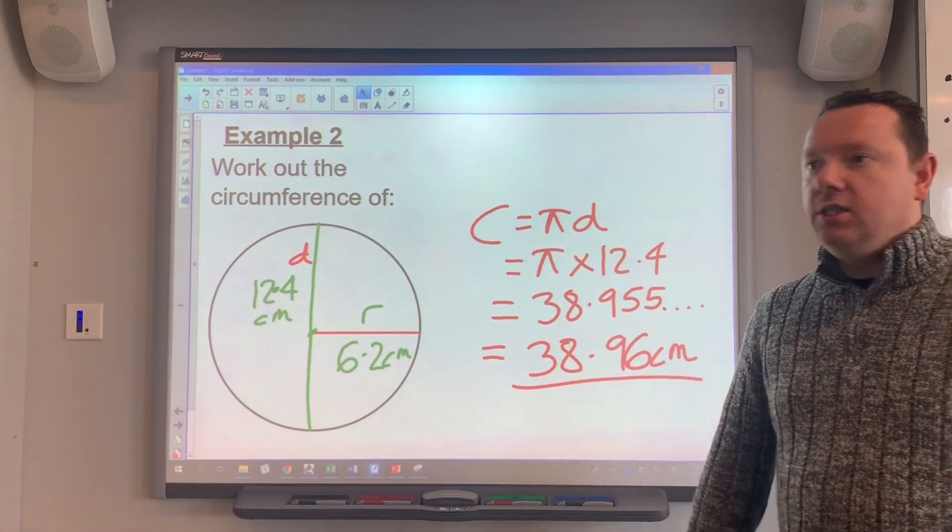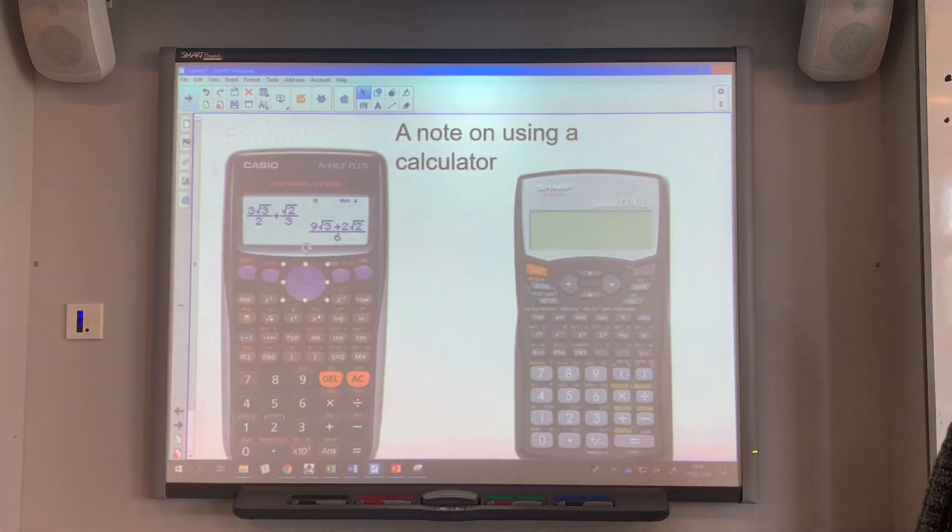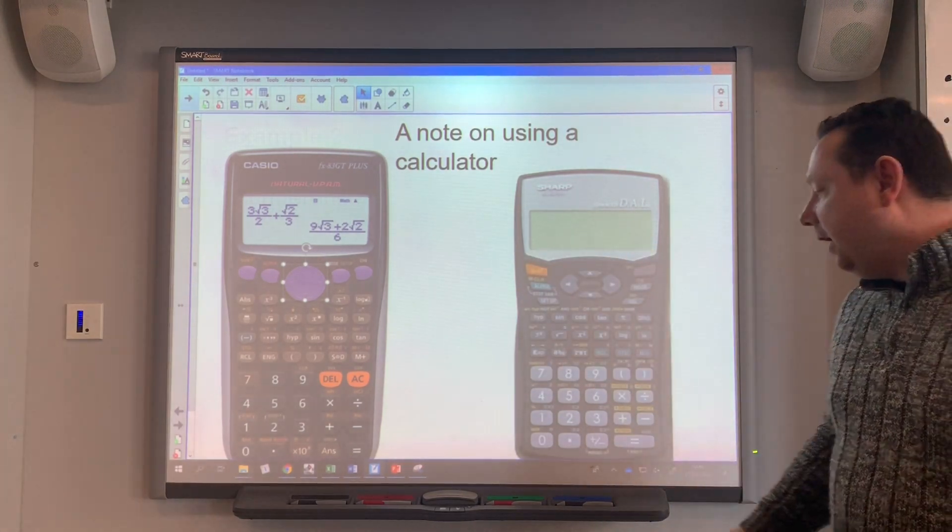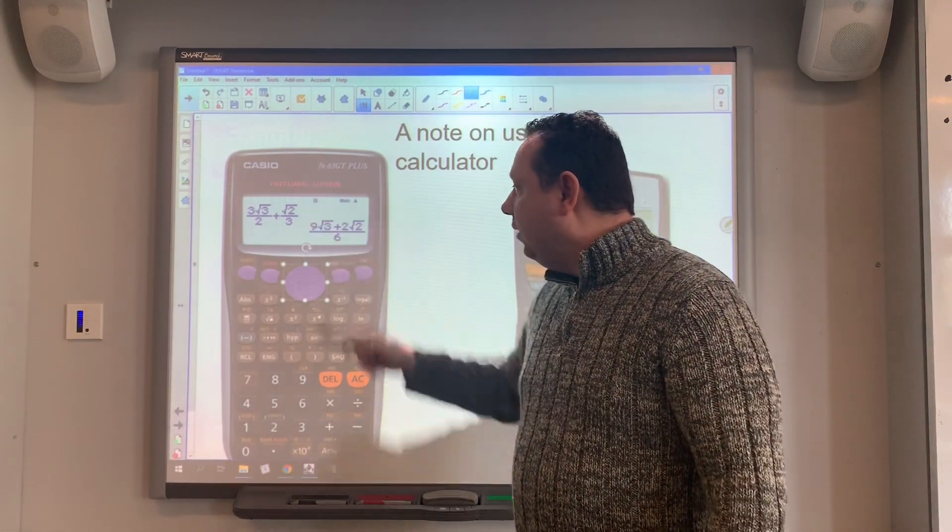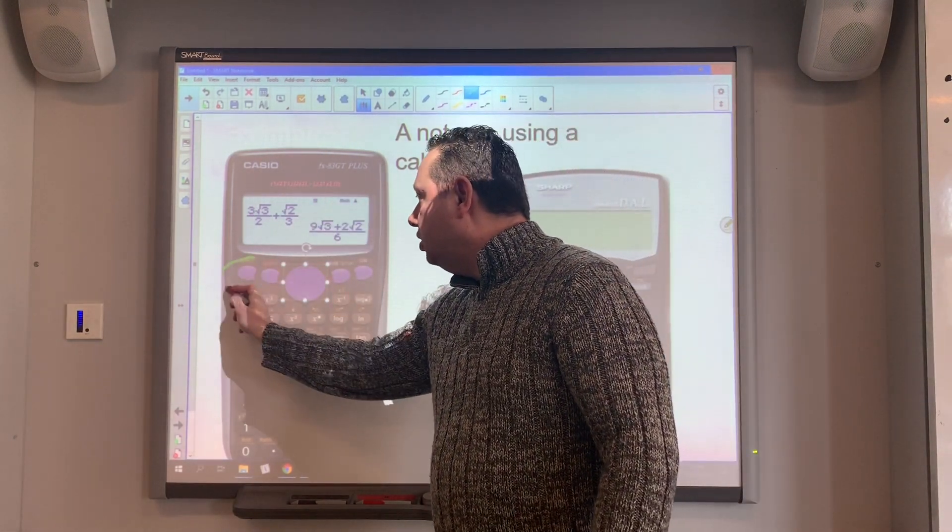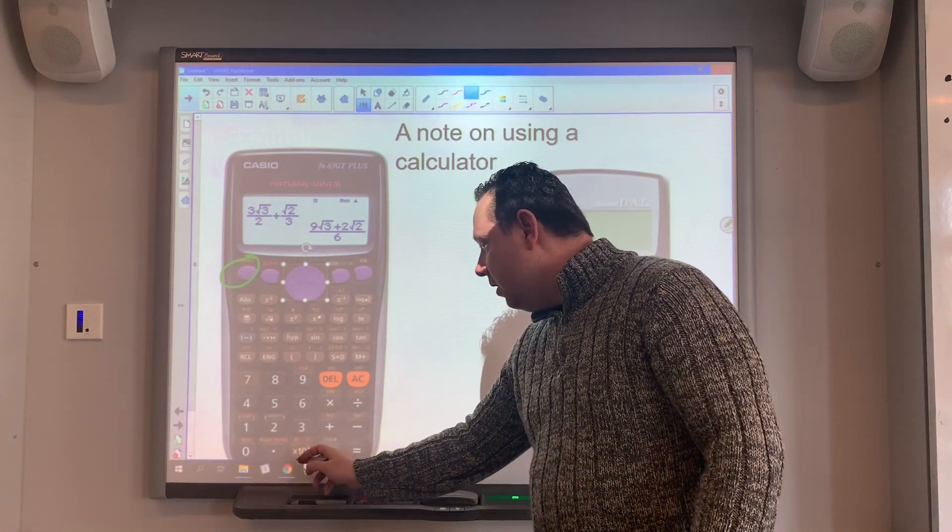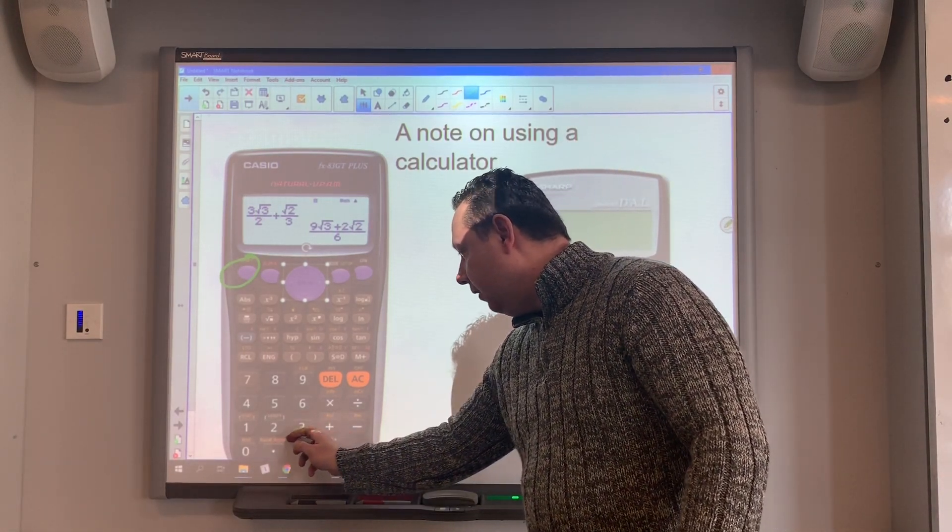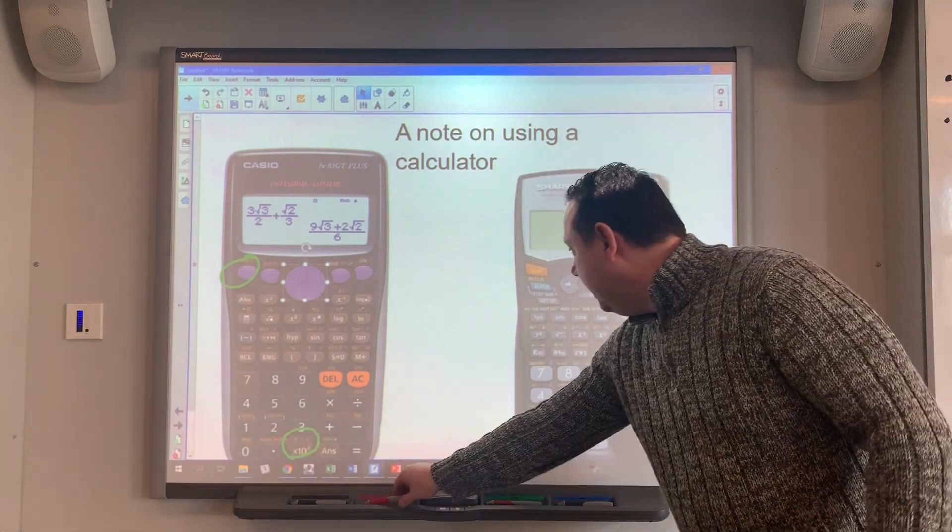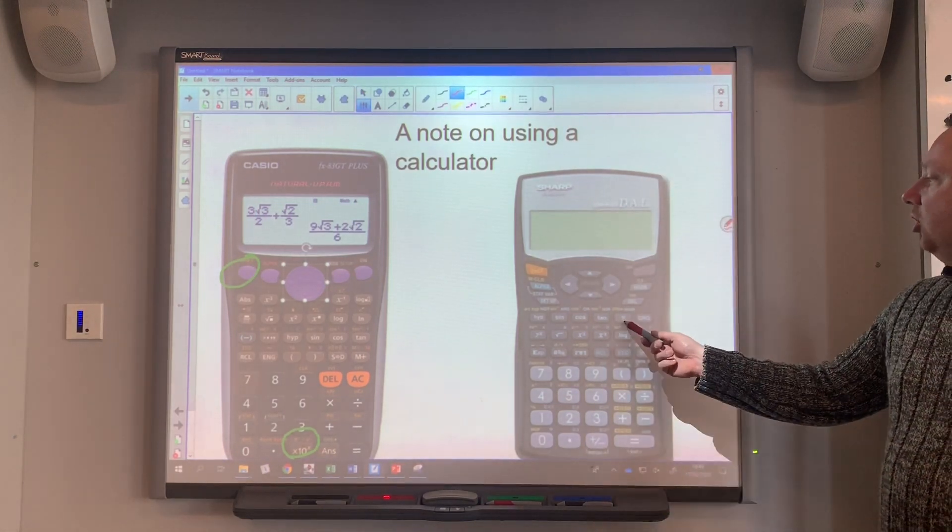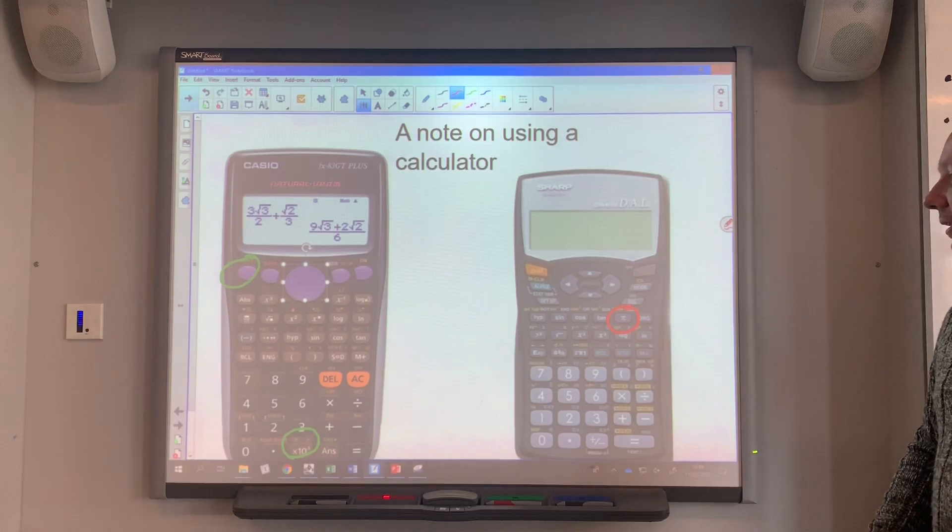Okay, a note on using your calculator. There's two types of calculators in the main: we've got Casio and we've got Sharp. If you want to use the pi button on a Casio calculator, the first button you press is shift, which is up here, and then you press the x10x button, which is right in the bottom here, and that will give you your pi. On a Sharp calculator, the pi button is just here, so you literally just have to press that button there.